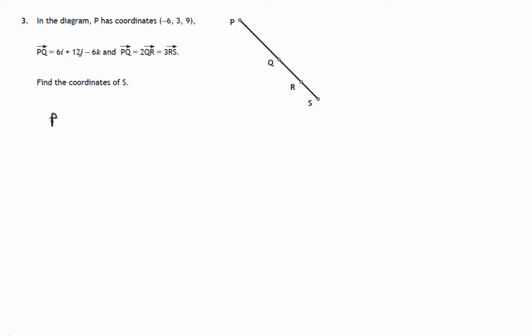So let's start off with what we do know. We do know that the point P is (-6, 3, 9). So we're up here and we know the coordinates of this point.